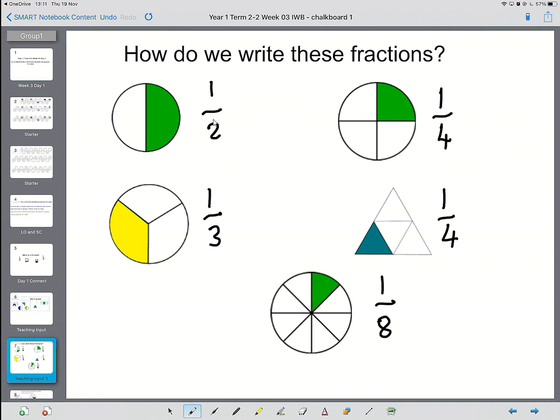So these have got special names. This first one here is called a half. This next one's called a third. These two are called quarters. And this is called an eighth.